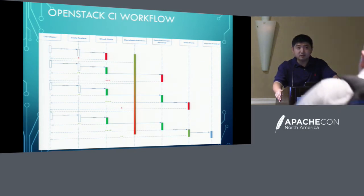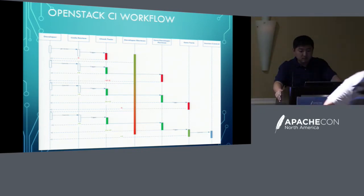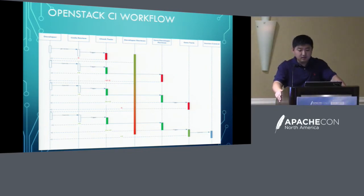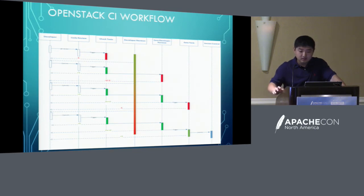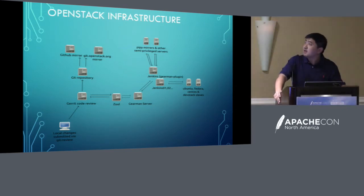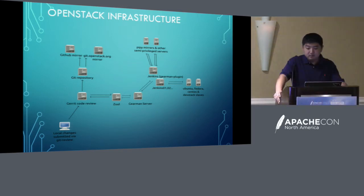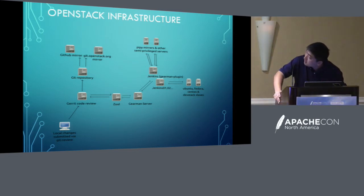After the gate test passes, the new code changes will be merged to the version control system. After that, there will also be some processes in the post queue. Once the code lands in the version control system, the post queue will do things like publishing the documentation to the live website. Also, to implement that workflow, the OpenStack infrastructure is consistent with the workflow.